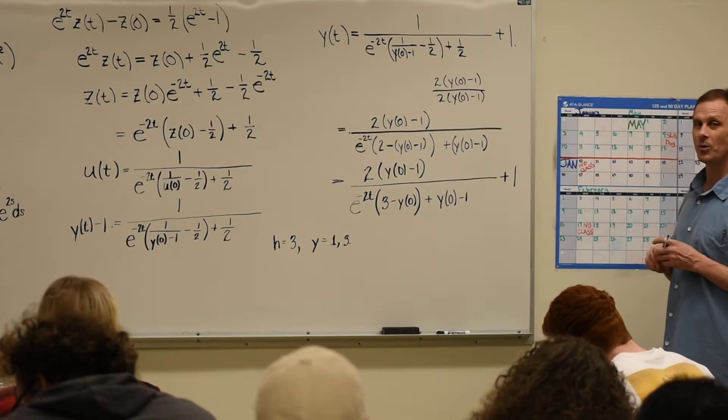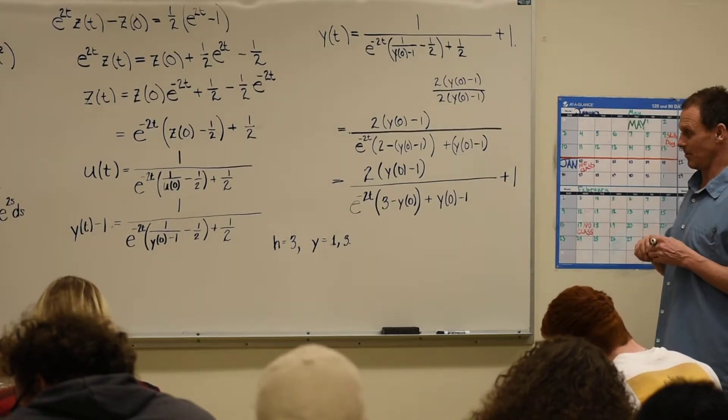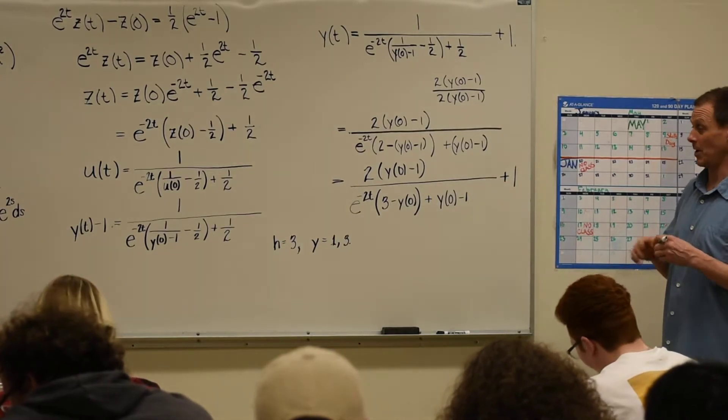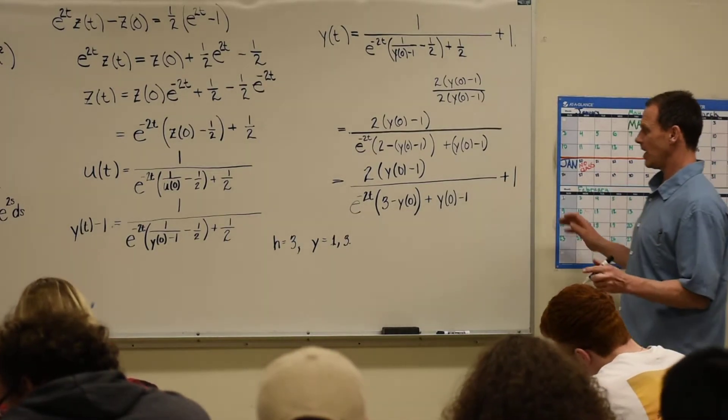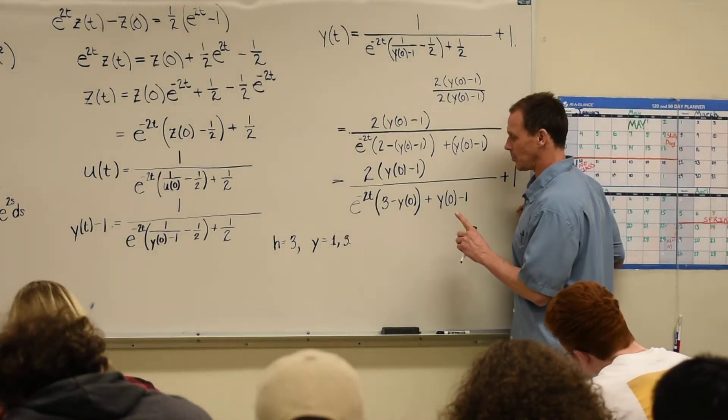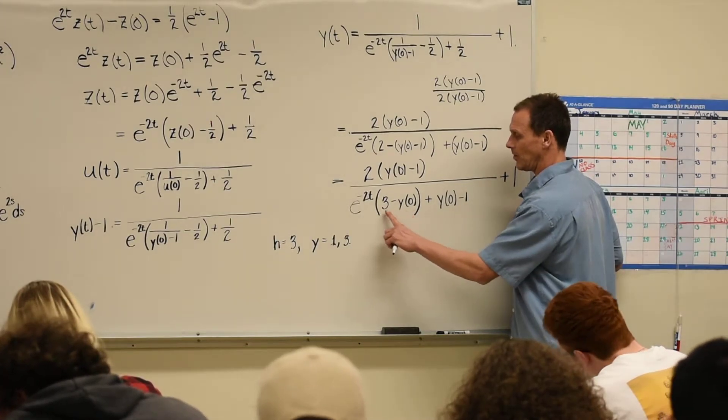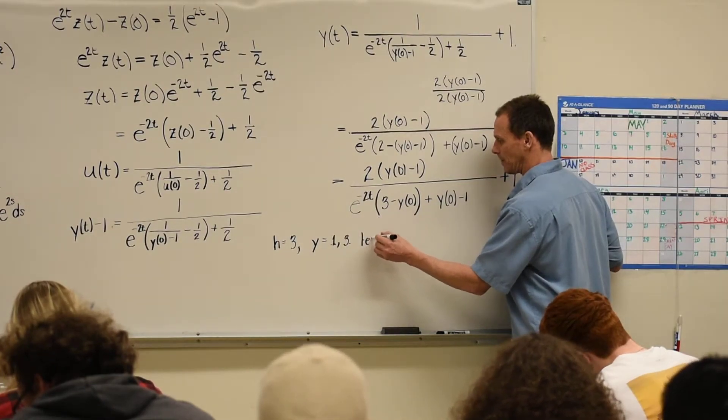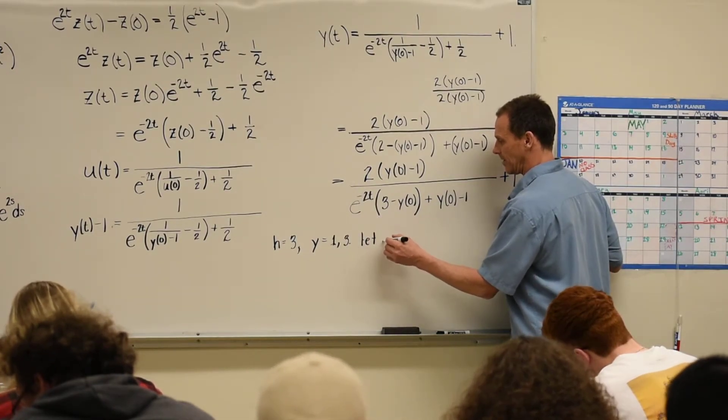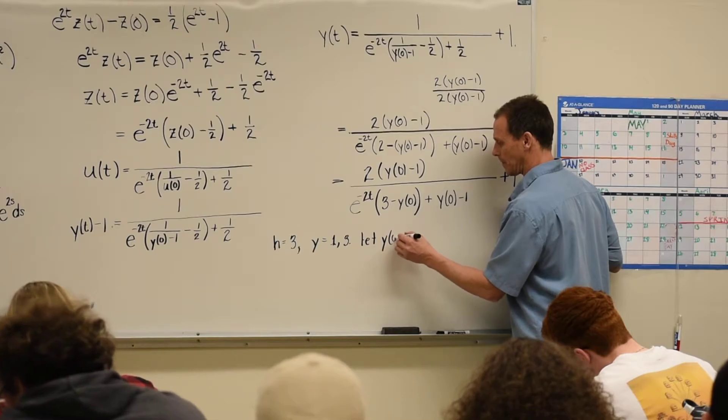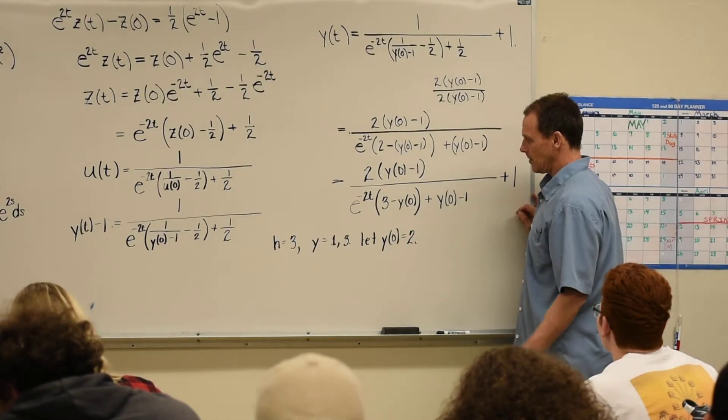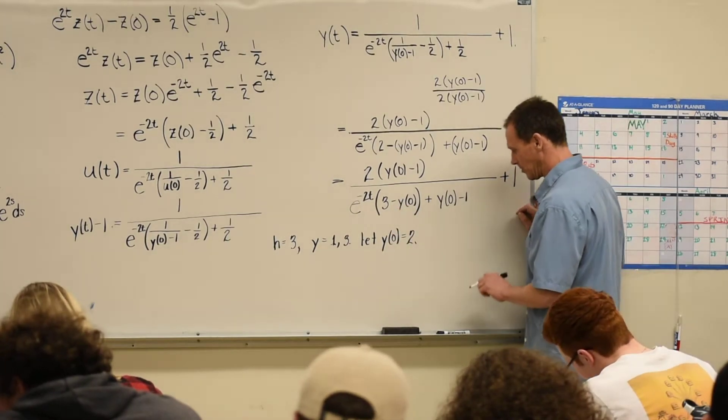So, if I start between 1 and 3, what would be a value between 1 and 3? 2. For example, yeah, 2 is an obvious one, sure. If I started at 2, let's see what this problem would be. So, this becomes a 3 minus 2. So, let's say, let's try. Let's let Y of 0 be 2. So, if I did that, let's make some changes here.